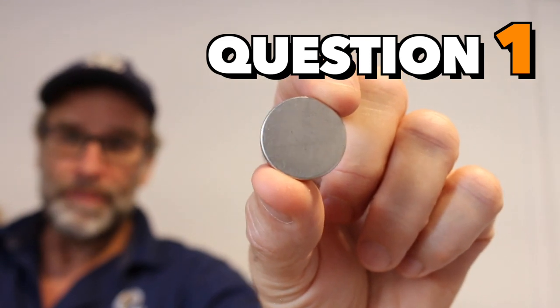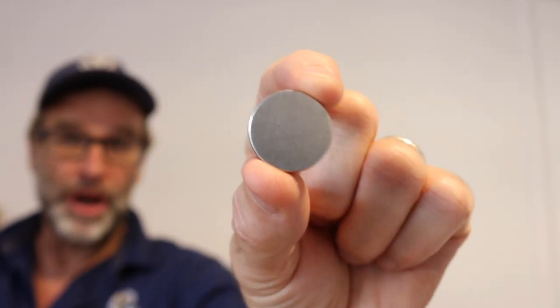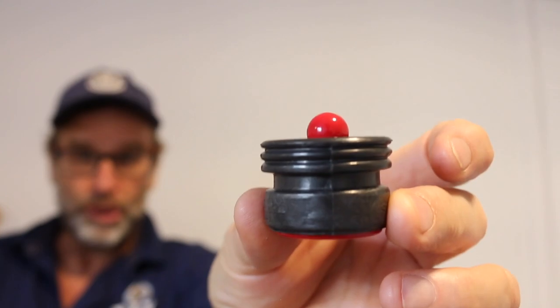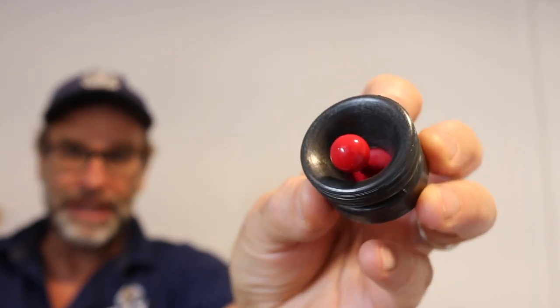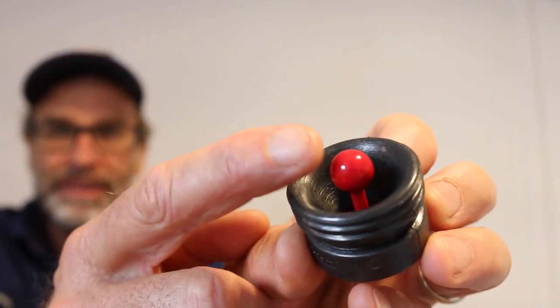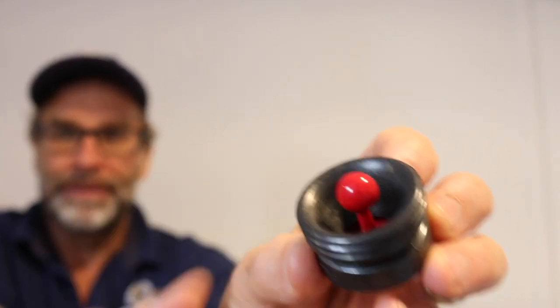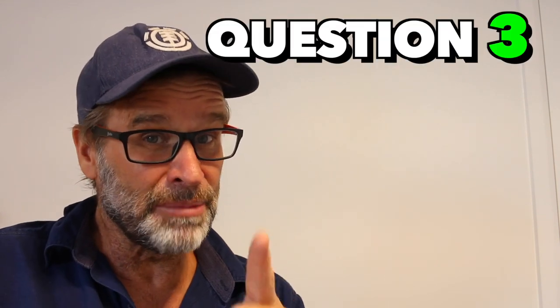Question one, what type of magnet did I use for my homemade stud finder? Question number two, what is the name of the magnetic stud finder that you can buy that has that little indicator? And finally, question three, in millimeters or inches, in a house, what is the standard stud spacing?